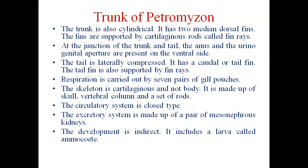The trunk is also cylindrical. It has two median dorsal fins, as shown in the diagram. The fins are supported by cartilage rods called fin rays. At the junction of the trunk and tail, the anus and the urogenital aperture are present on the ventral side. The tail is laterally compressed and has a caudal or tail fin, which is also supported by fin rays.